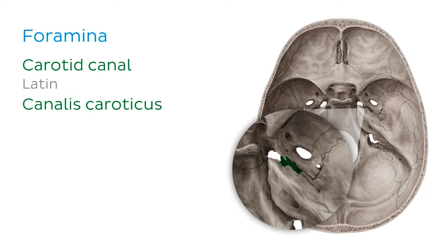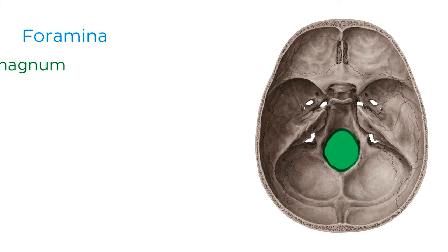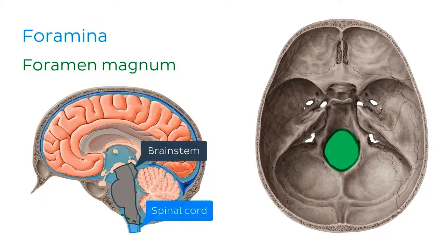In the posterior cranial fossa, it is worth noting the largest opening in the skull, known as the foramen magnum. Here, the brainstem leaves the skull and becomes the spinal cord.